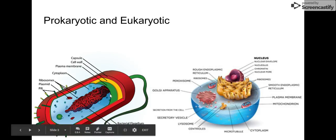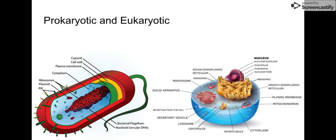Prokaryotic is this organism over here. Bacteria are going to be an example of a prokaryotic organism. They do not contain a nucleus. They do not contain membrane-bound organelles beyond ribosomes, so it is a very primitive cell. It only contains ribosomes, and then the DNA and RNA is just contained inside of a nucleoid zone inside the cell.